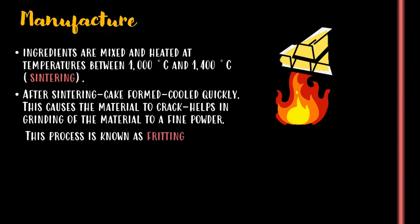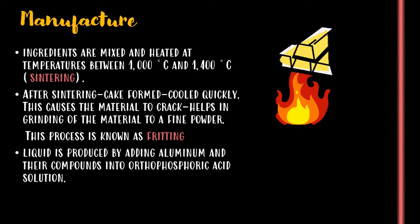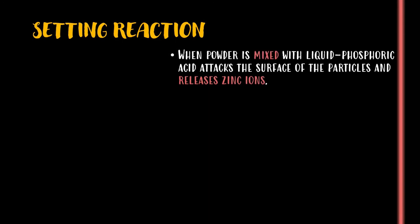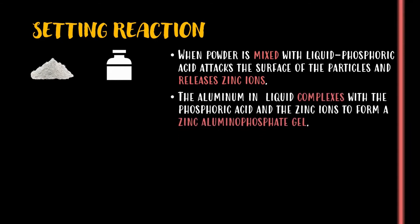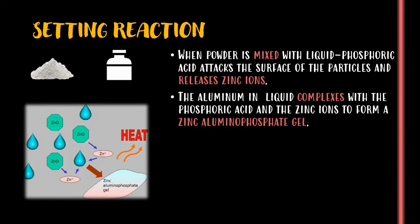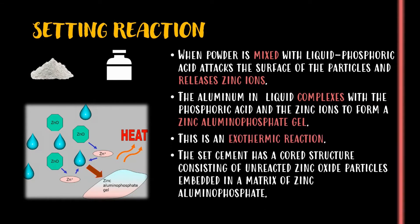This process is known as fritting. The liquid is produced by adding aluminum and their compounds into orthophosphoric acid solution. In the setting reaction, when the powder is mixed with liquid, phosphoric acid attacks the surface of the particles and releases zinc ions. The aluminum in the liquid complexes with the phosphoric acid and the zinc ions to form a zinc aluminum phosphate gel. This is an exothermic reaction.